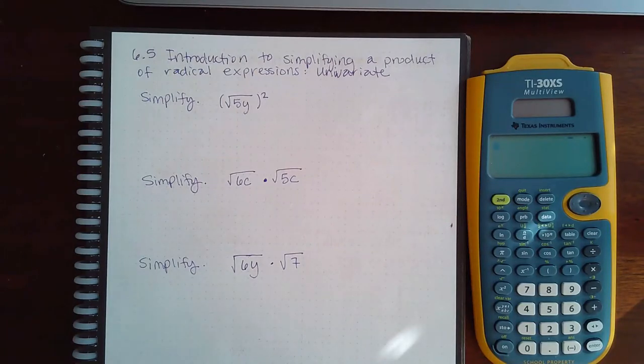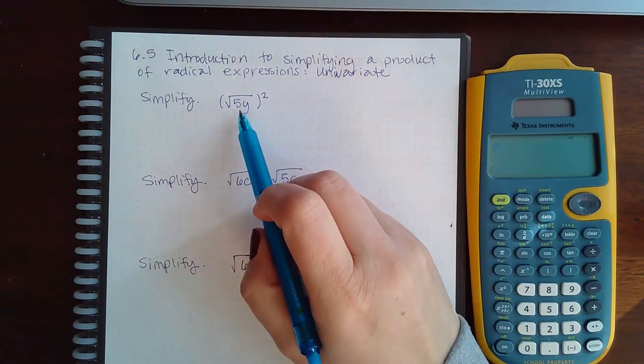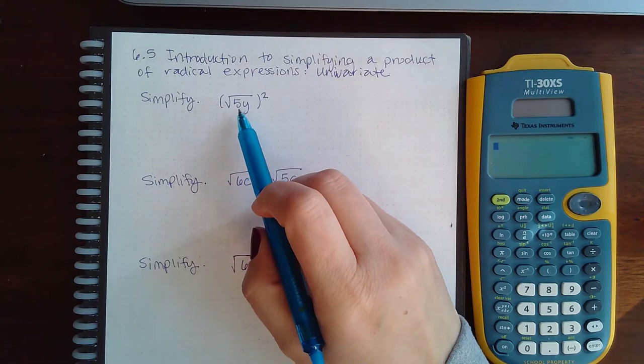Here we have 6.5 introduction to simplifying a product of radical expressions with variables. So now we're getting variables involved. It really doesn't matter whether there's variables involved - that concept that a square root and a square cancel each other still applies.